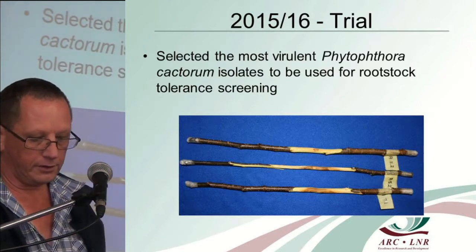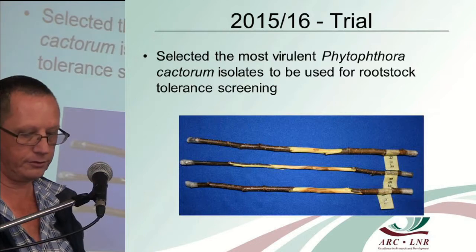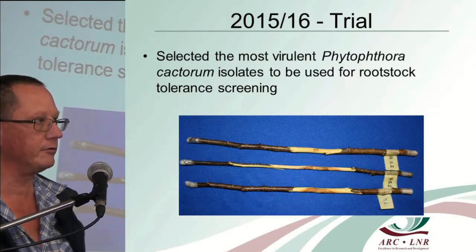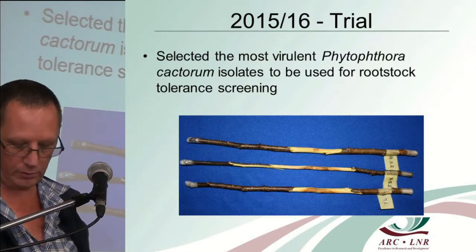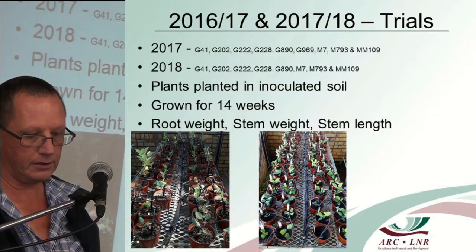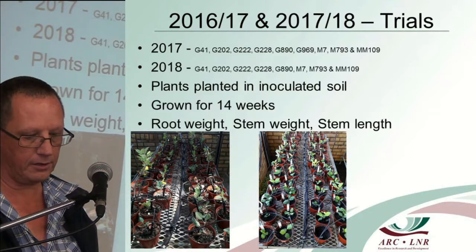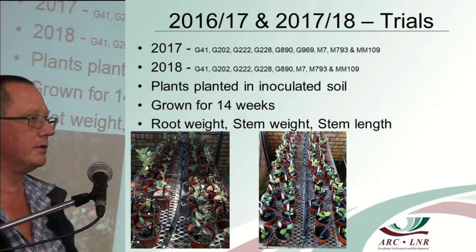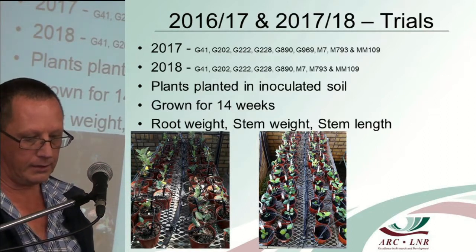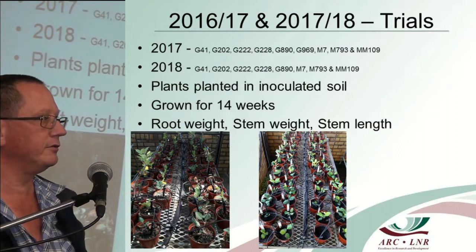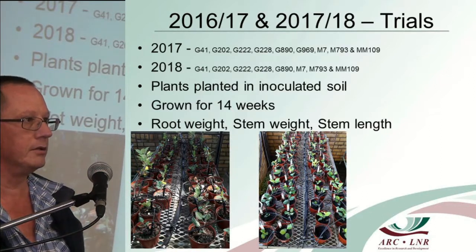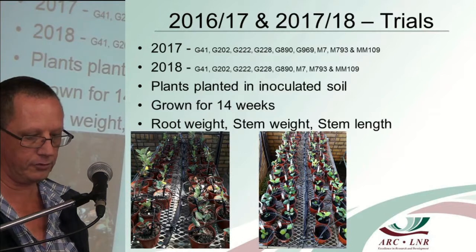First of all, we inoculated apple shoots with different Phytophthora cactorum isolates to get the most virulent isolates to be used in the trials. We then did two trials during two seasons. Different rootstocks were planted in inoculated potting medium, and the plants used were tissue culture plants, which was a big challenge to obtain for the different rootstocks.